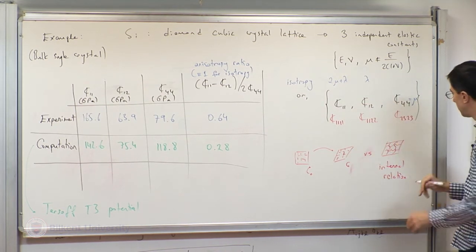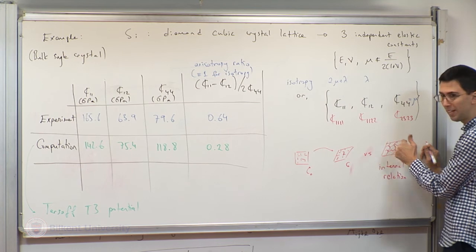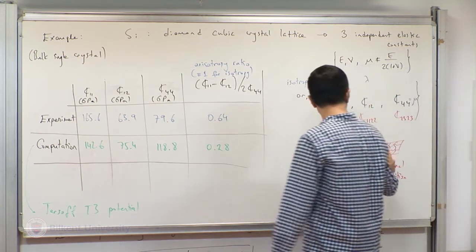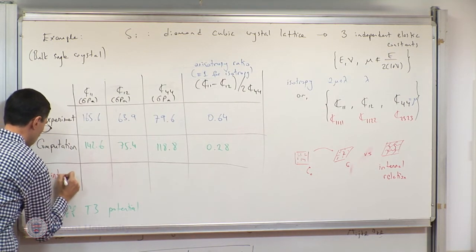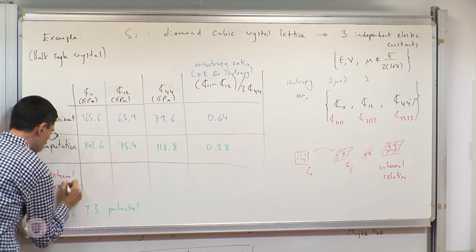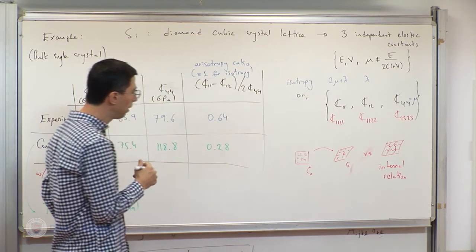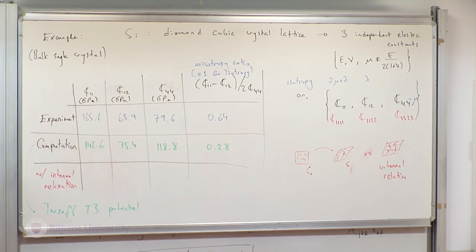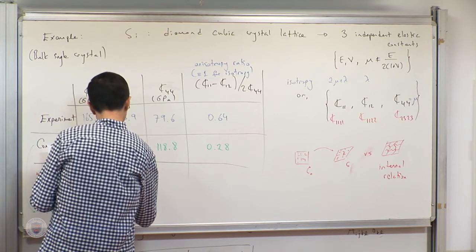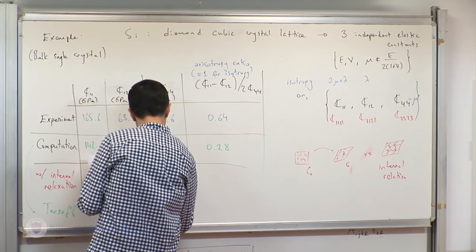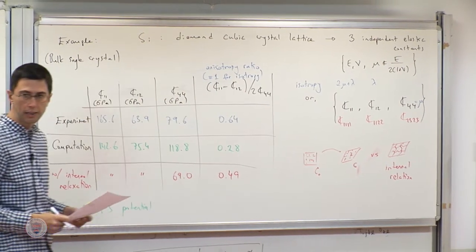There are also other boundary conditions you could impose on this large piece of crystal, which would implicitly let the boundary relax. Once done properly — computationally a little bit more expensive but certainly doable — you obtain a result that is slightly better.